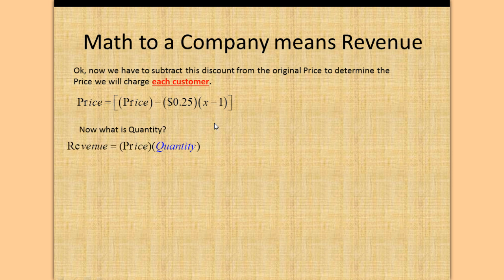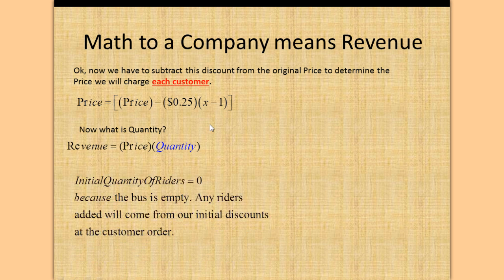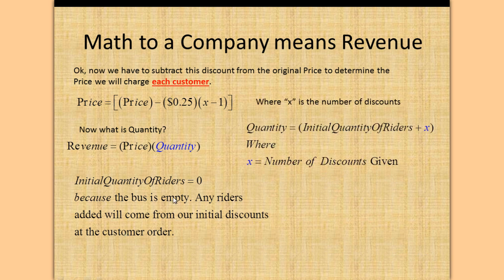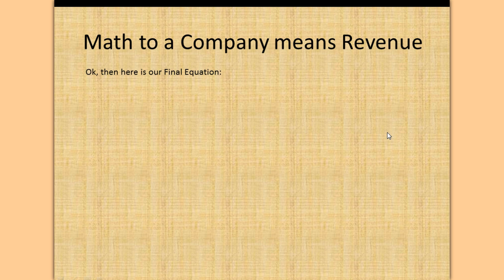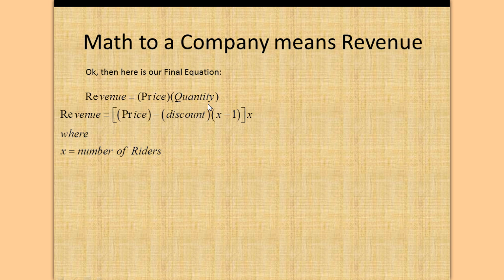Revenue equals price times quantity. The initial quantity of riders is zero because the bus is empty — any riders added will come from our discounts at the customer order. Where X equals the number of discounts, quantity equals the initial quantity of riders plus however many riders we get from discounts. Since our initial quantity is zero, quantity equals X. Here is our final equation: revenue equals price times quantity, where price is (price minus discount times (X minus 1)) times X, where X is the number of riders.